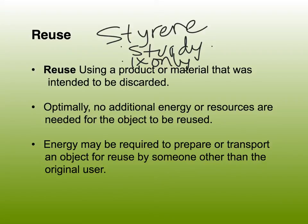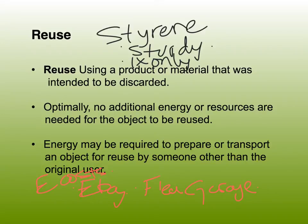Energy may be required to prepare or transport an object for use by someone other than the original user - things like eBay, swap meets, flea markets, and garage sales. You have to factor in the energy costs of reuse. Just because you're reusing something doesn't mean it's automatically better for the environment - the cost of petroleum, emissions from cars or airplanes if you ship it, all those things have to be factored in.